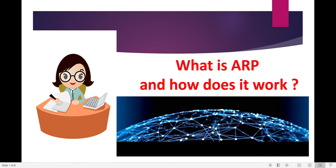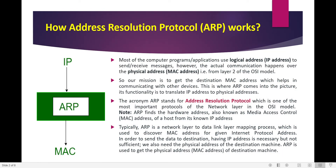Today we will see what is the meaning of ARP and how does it work. ARP is a networking term known as the Address Resolution Protocol. As the name suggests, it is the protocol used in the resolution of networking devices' addresses. Most computer programs or applications use a logical address, that is an IP address, to send or receive messages. However, in actual communication, the address used will be a physical address, that is a MAC address. So ARP is used to translate an IP address into a physical address.